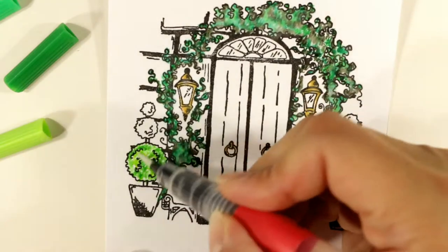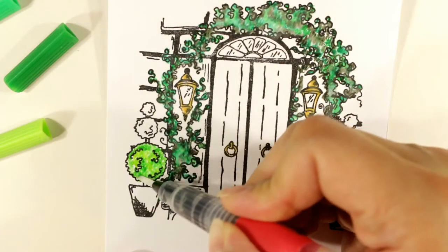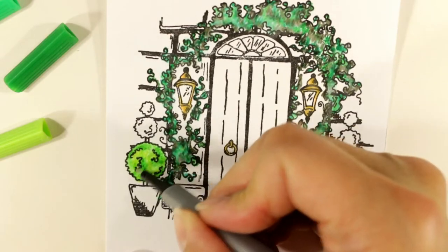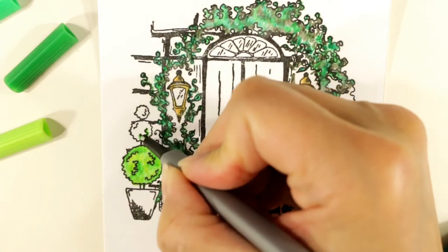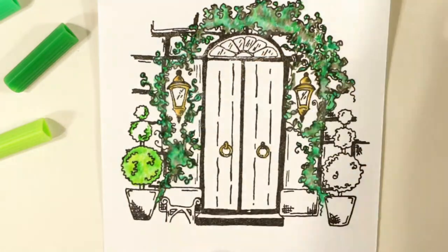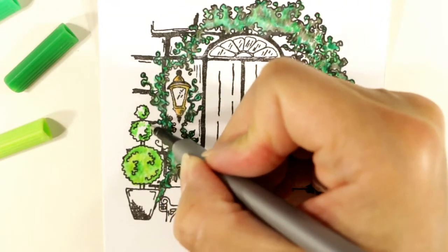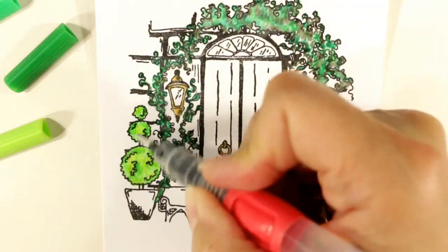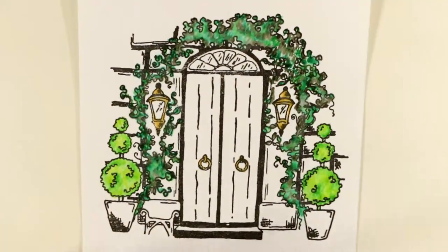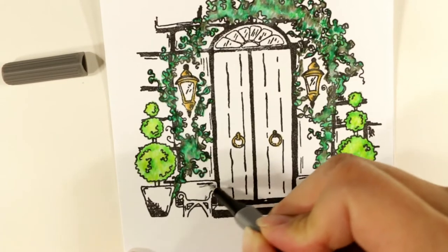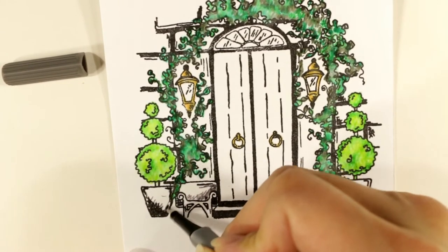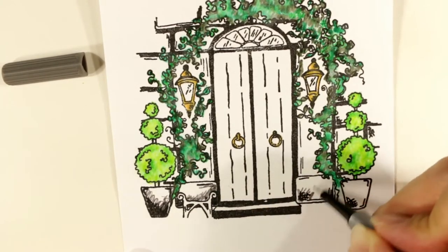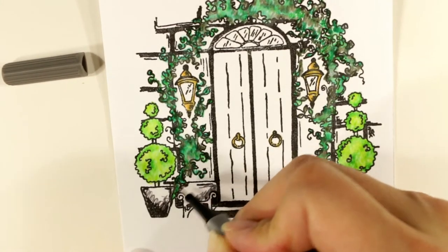For the topiaries, I decided to use another three green combination. This is a little bit lighter. I wanted it to look like spring growth on these topiaries. And so I'm starting with like a mid-tone green, then a lighter green, and then almost like a citron green, yellow green. And I'm blending those out.